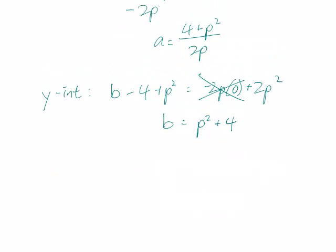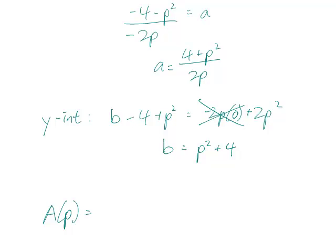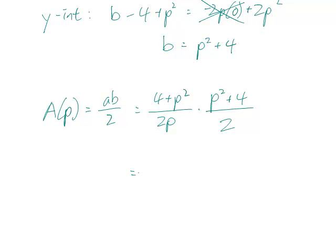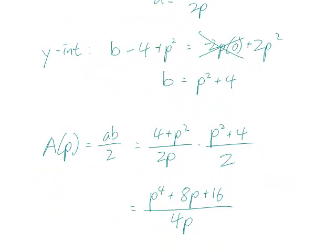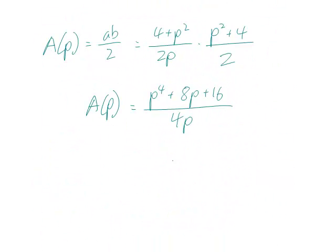And so now we can write our objective function down. A of p is ab over 2, which means it's 4 plus p squared over 2p, times p squared plus 4, that's b, all over 2. And so this is p to the 4th plus 8p squared plus 16 over 4p. p is bounded between 0 and 2, because this parabola only exists through those x coordinates.